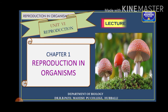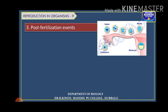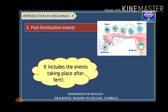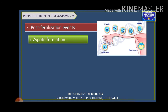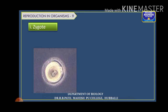In this last lecture, let us see what the post-fertilization events are. Post-fertilization refers to the events or developments that occur after fertilization, that is after syngamy. The post-fertilization events consist of two phases: one is zygote formation, and the second phase is embryogenesis.